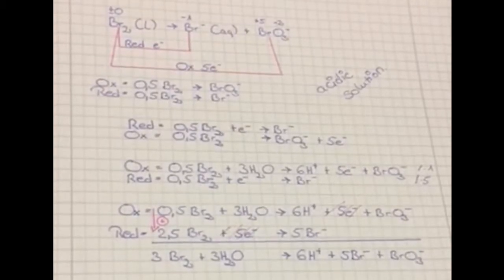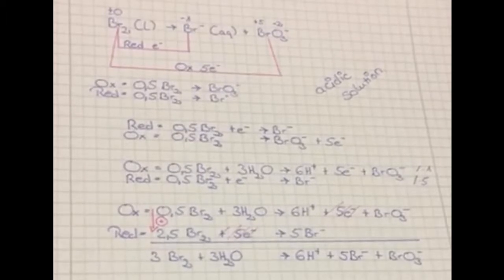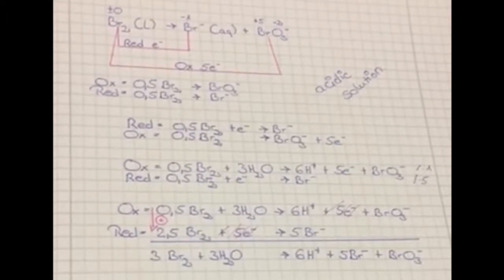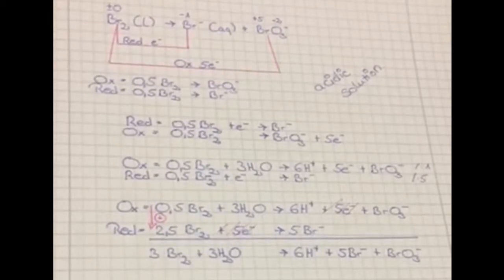Now we should identify the half reactions. We have two bromine in this reaction. One is reduced and the other one is oxidized. Bromine went from 0 to minus 1, it decreased by 1. And the other one is rising to plus 5.